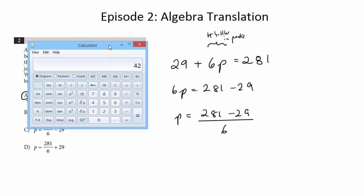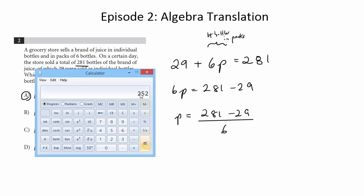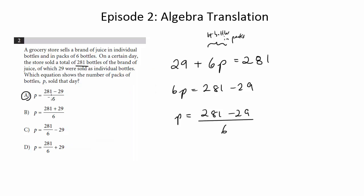So 281 minus 29 gets me 252 divided by 6. So I would have 42 packs, and this totally makes sense. If you do 42 times 6, and then you add the 29 back on, you get your 281, which is what you would have expected. So everything's consistent, and we're going to go with choice A.